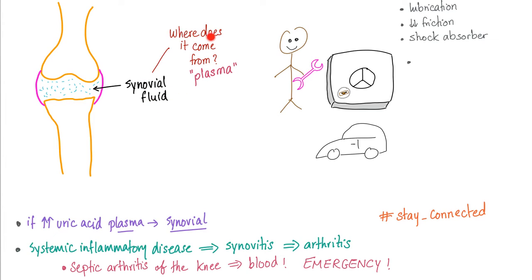Since the synovial fluid comes from the plasma, if you have hyperuricemia in the plasma, you will have lots of uric acid in the synovial fluid — makes perfect sense, like father, like son. Systemic inflammatory diseases will cause synovitis and arthritis. You have inflammation all over your body, so no wonder the inflammation can spread into your joint and cause synovitis and arthritis.